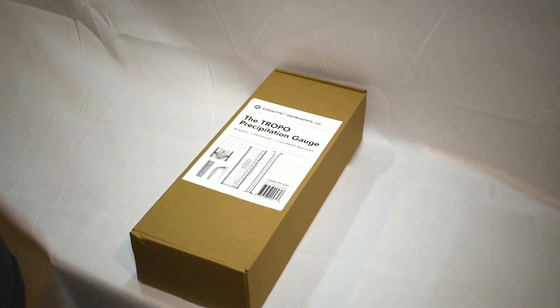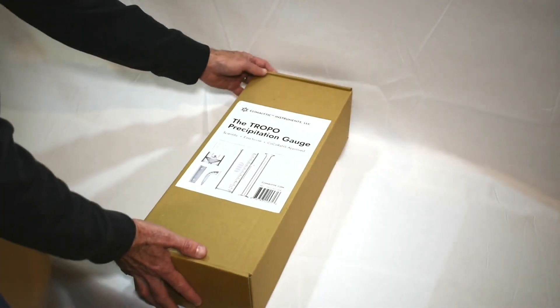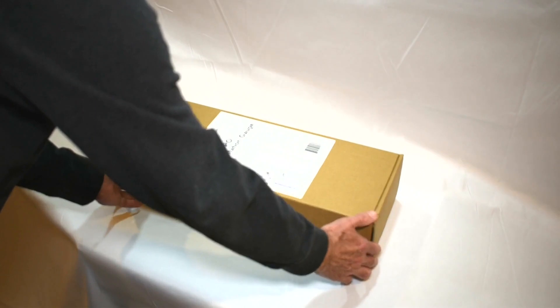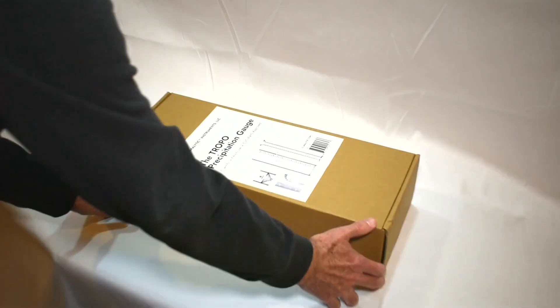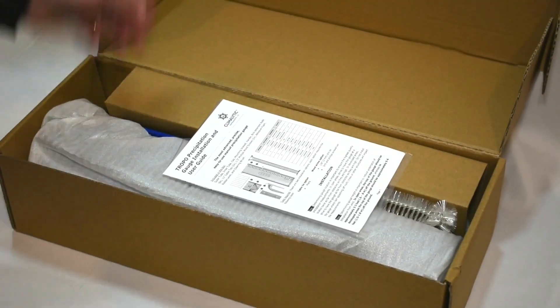When you receive the gauge it'll look like this in a box. It will have a taped side on one side. Simply cut that tape and then open the flaps and the box will open sideways. It's a very convenient design so that you can see the gauge and get everything out easily.